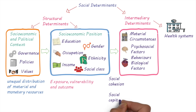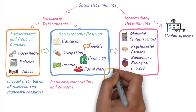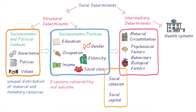Social cohesion and social capital are factors that bridge the structural and intermediary determinants. They describe the willingness of people living in a community to make sacrifices and to cooperate with each other for a wider benefit.